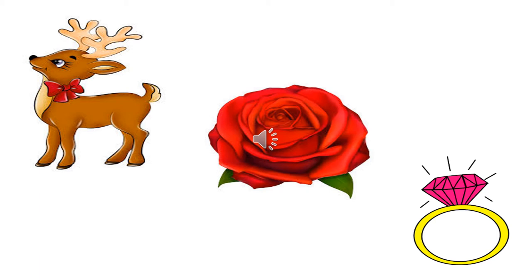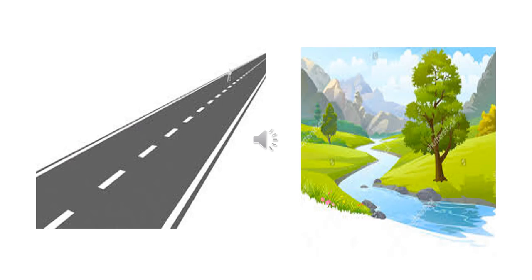R for red, rose, ring. R for road and R for river. So children, remember: letter R makes the sound R. R for rocket, rectangle, rain, reindeer, rose, red, ring, road, river, robo, rainbow, rat.